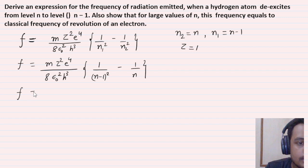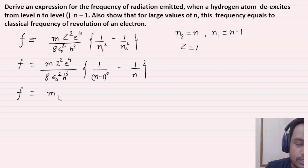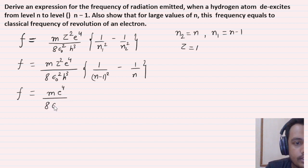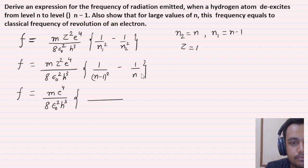So f equals me⁴ / (8ε₀²h³) multiplied by — now take the LCM. The LCM will be N² × (N-1)². Always refer to the previous step before writing the next step.